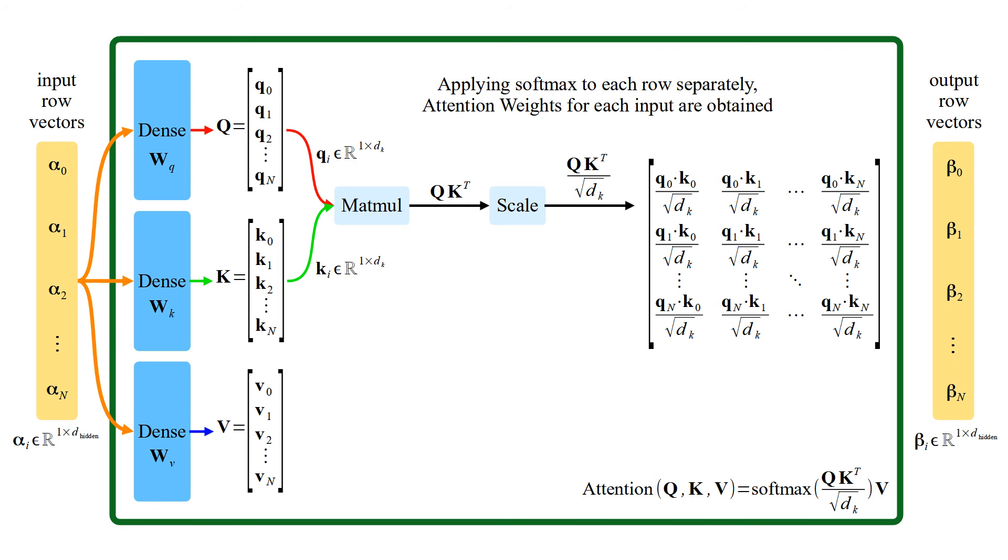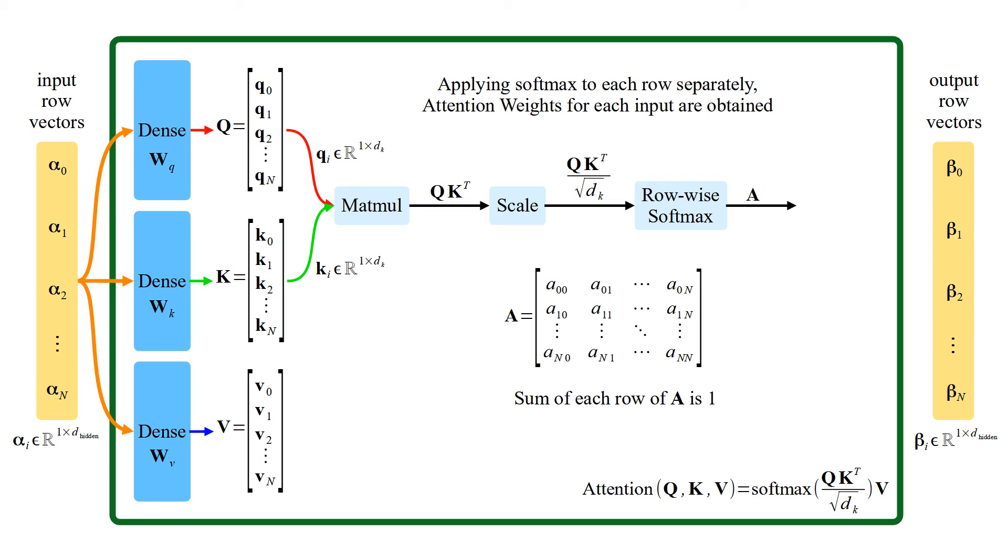Applying softmax to each row separately, attention weights for each input are obtained. Sum of each row is one. So, attention weights are not fixed or learned, they are computed for each input.